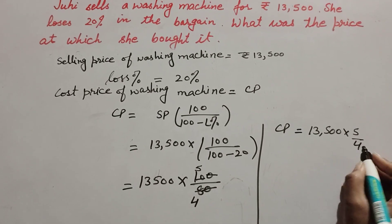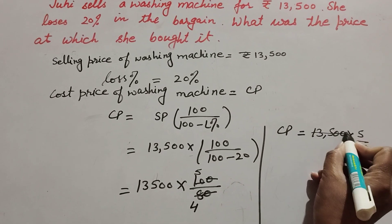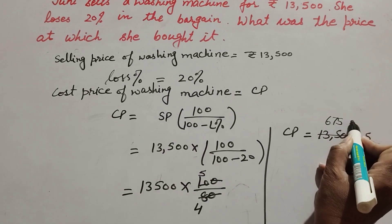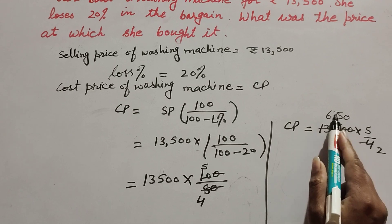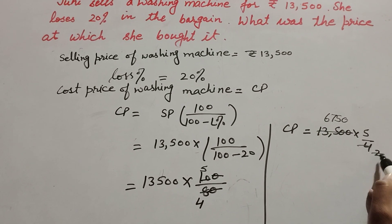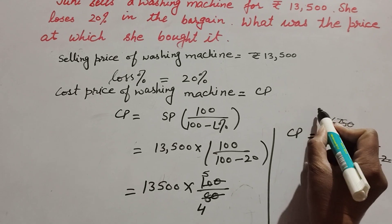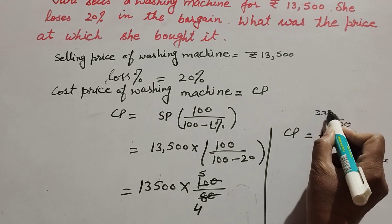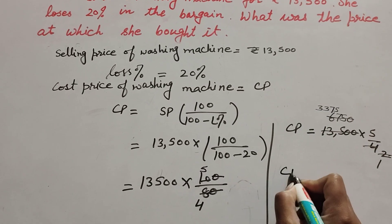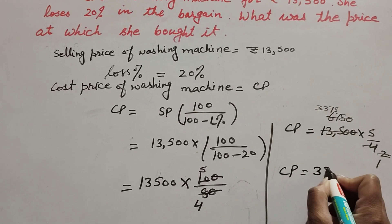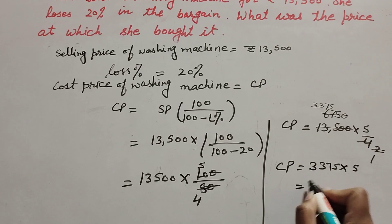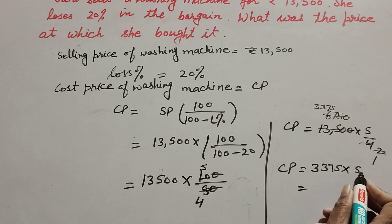Again, 13,500 and 4 are both divisible by 2, so we cancel them. 13,500 divided by 2 gives 6,750. Again, 6,750 is divisible by 2, so we cancel again — 6,750 divided by 2 gives 3,375. So cost price equals 3,375 multiplied by 5.